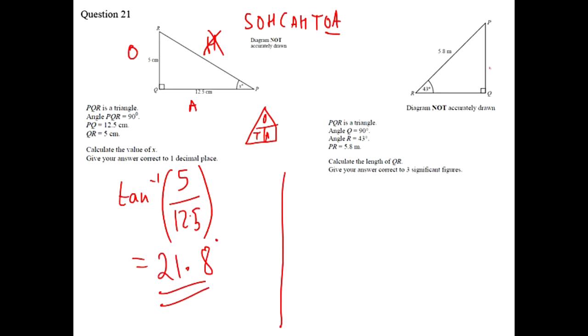For this next one you'll label it again. We've got O here, H here and A down here. And we're finding QR which is the bottom one down here so that's our X. So we're finding A. So we don't need this O here at all.